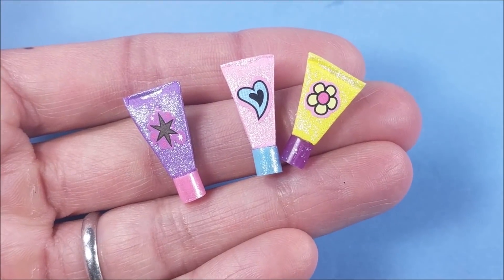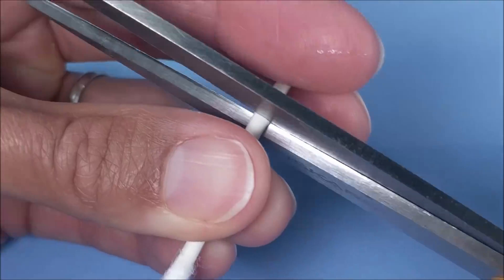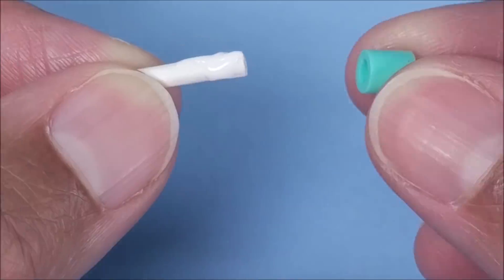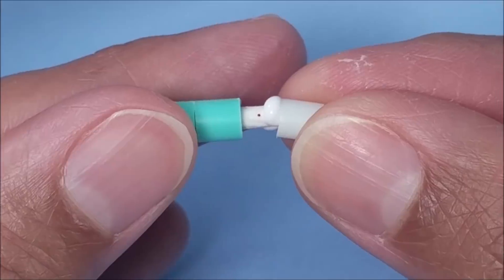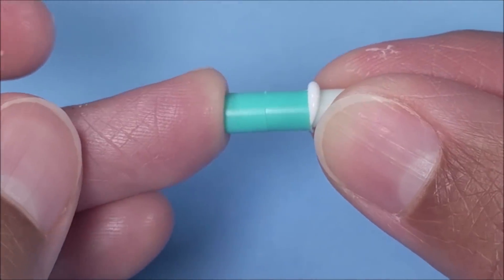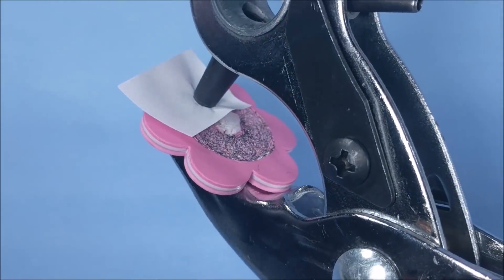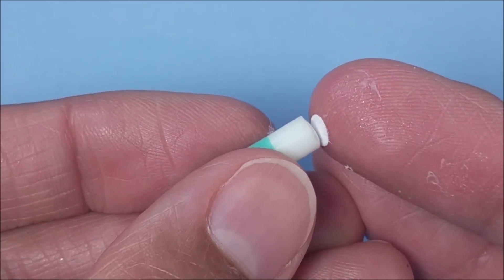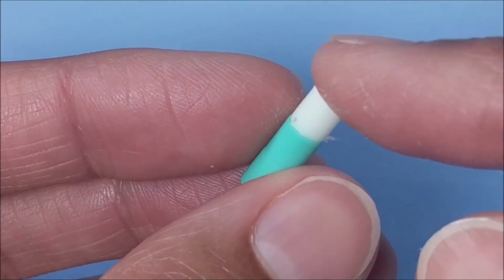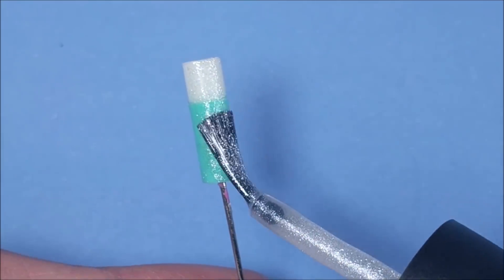Adding stickers for detail. Next up, I make easy chapsticks using a q-tip, more perler beads, and more glitter nail polish.